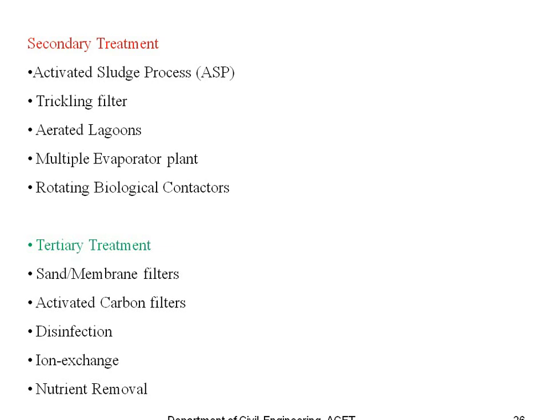In tertiary and secondary treatment, the activated sludge process is used, followed by trickling filters, aerated lagoons, a multiple evaporator plant, and rotating biological contactors. All these equipment treat the contaminated water and make it pure. Then sand membrane filters and activated carbon filters are used to make the contaminated water clear. Finally, disinfection, ion exchange, and nutrient removal are performed — all these steps purify the water and make it useful.